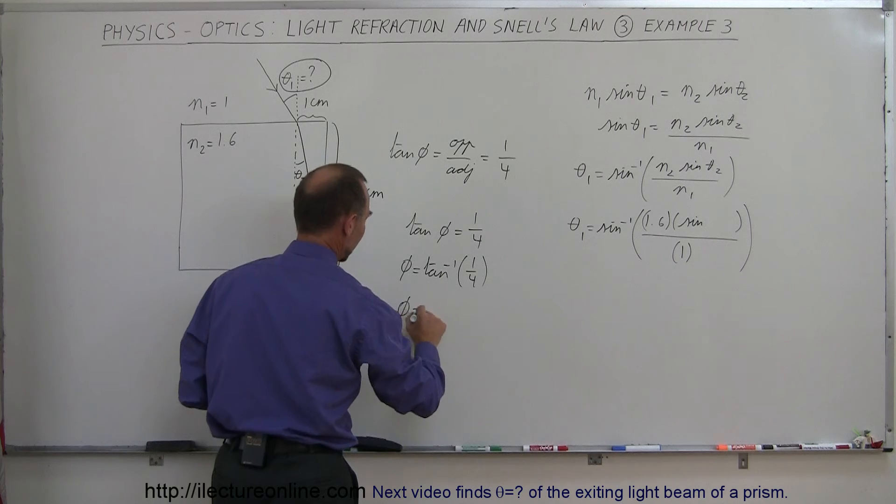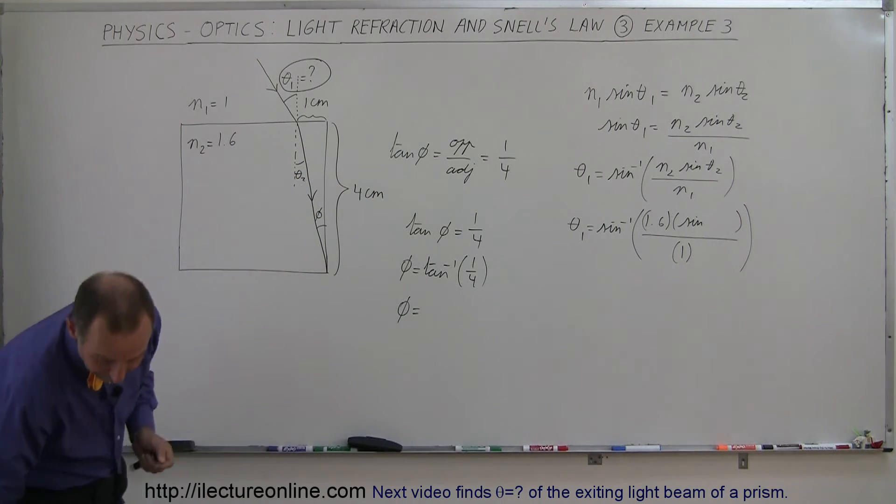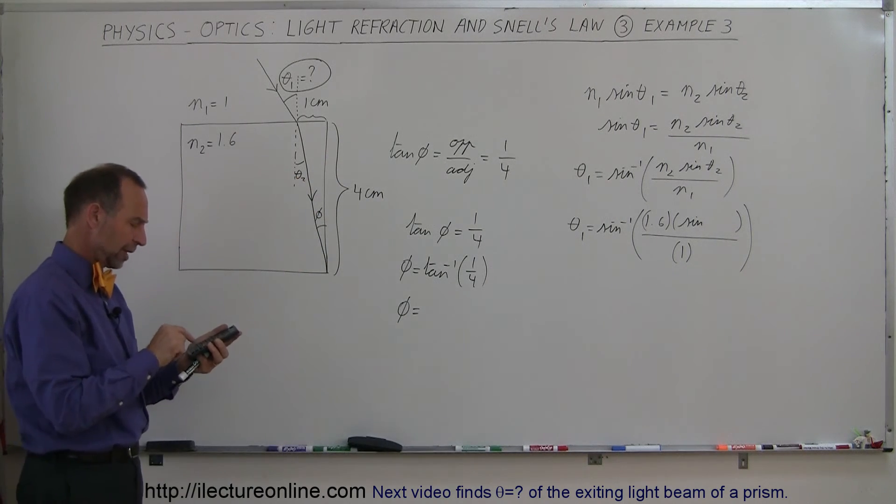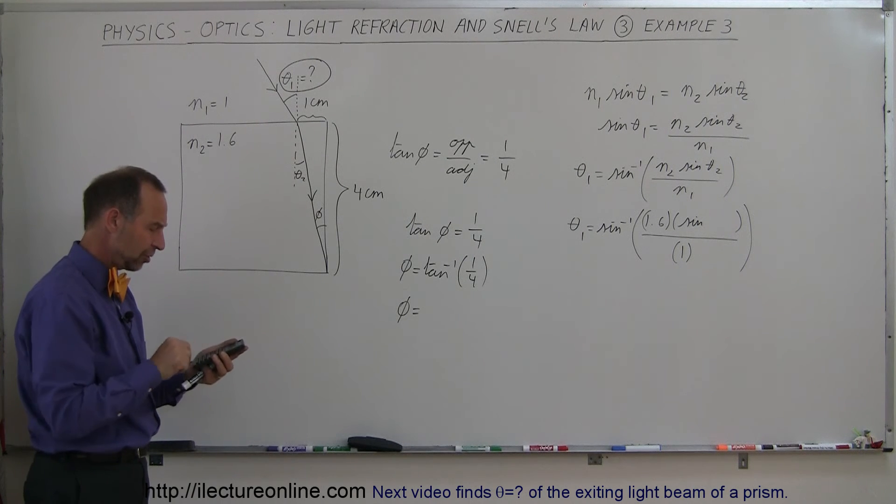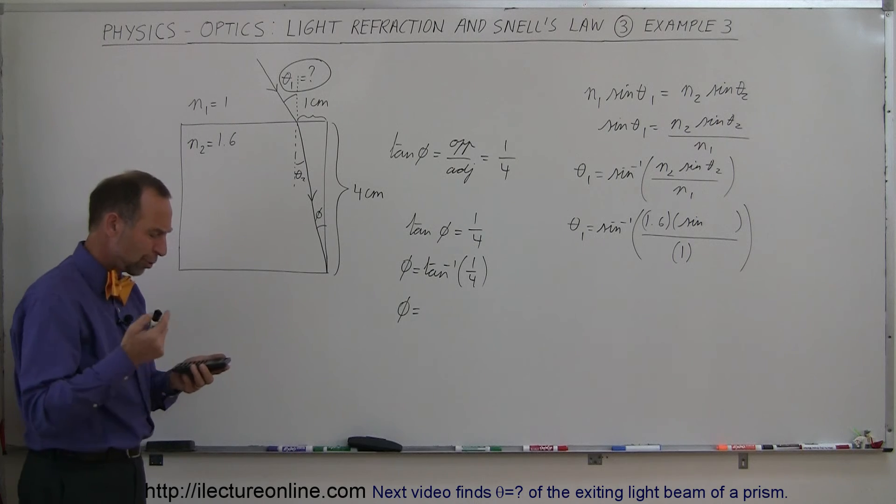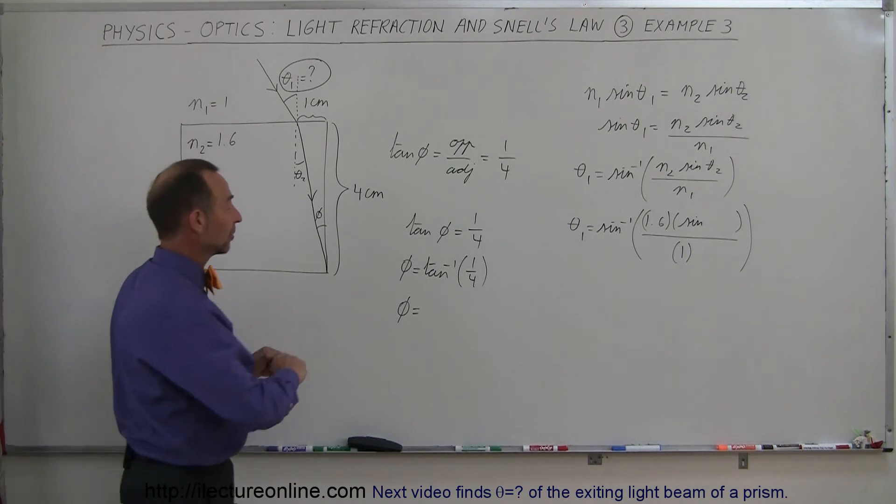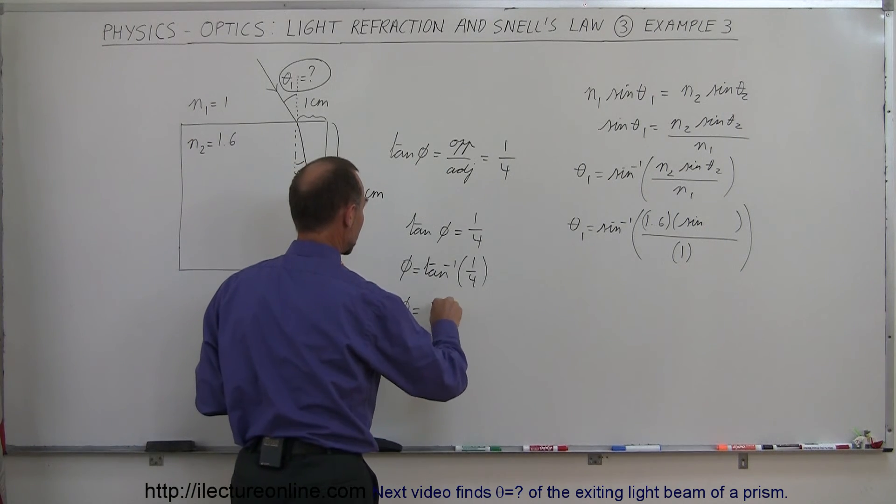And so phi therefore is, let's get a calculator for that. So 1 divided by 4, take the arctangent of that, arctangent, and we get 14.0 degrees. Let's call it 14 degrees. So it's equal to 14 degrees.